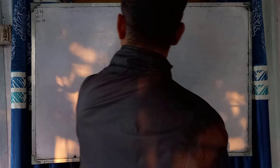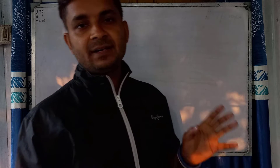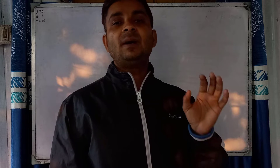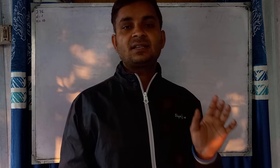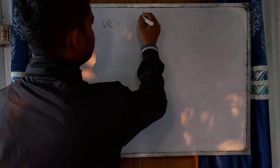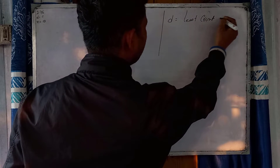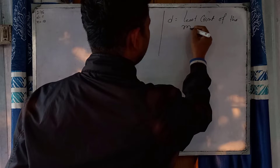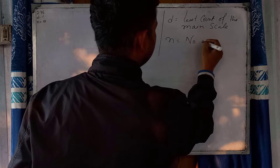According to our data, the reading is 2.76 inches. D is 0.1 and N is 10. D means the least count of the Vernier scale, or the smallest number of the main scale. We need to calculate VC, which equals D divided by N. D equals the least count of the main scale and N equals the number of Vernier divisions.